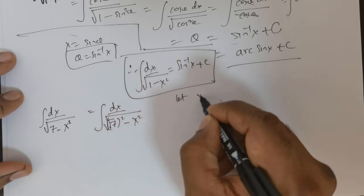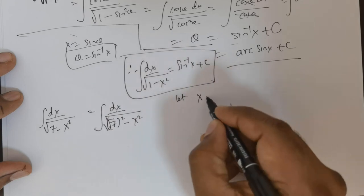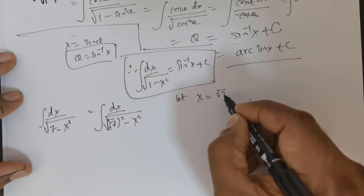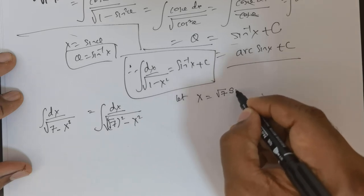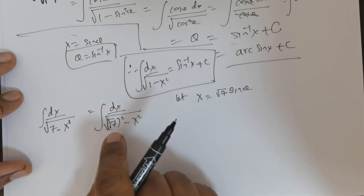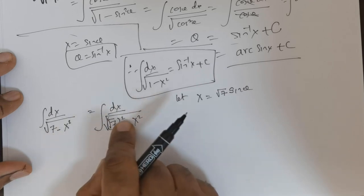Now let me make the substitution. Whenever you have a constant like this, your substitution should be x equals root 7 times sin theta. This should be the way in which you take the substitution. That is the reason I wrote 7 as root 7 squared.